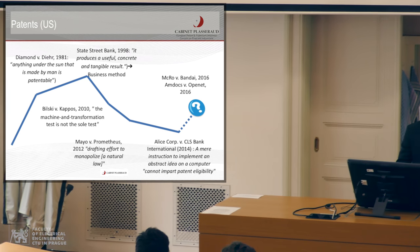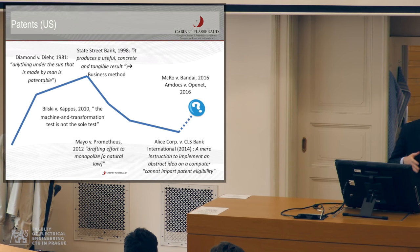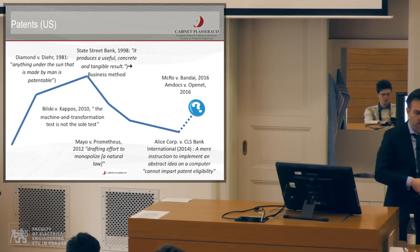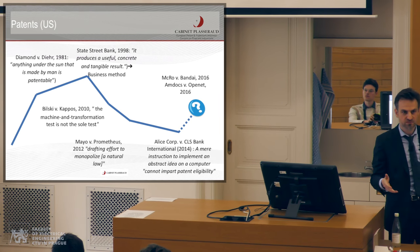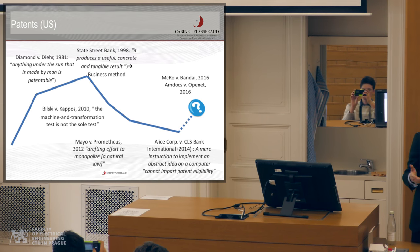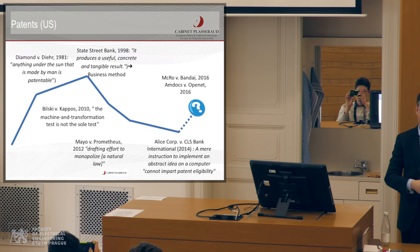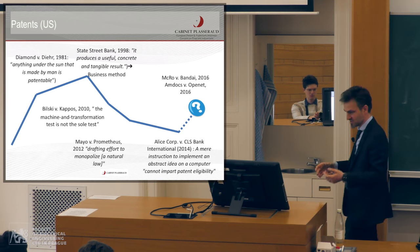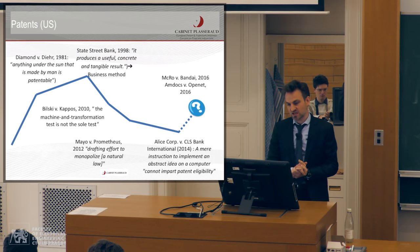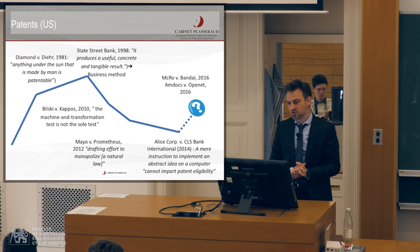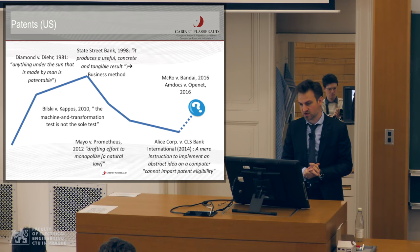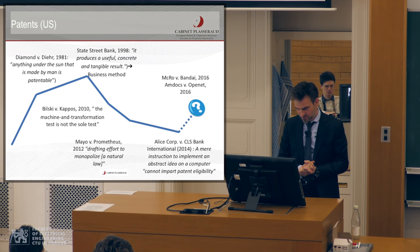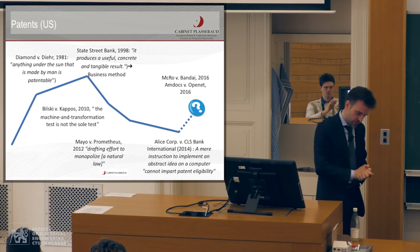If you cannot have a patent because it's in the lower part of the wave, just wait five years and you will have a patent on the same invention because the court will allow it. In the US, it's more volatile than in Europe. In Europe, the type of decisions are more stable.